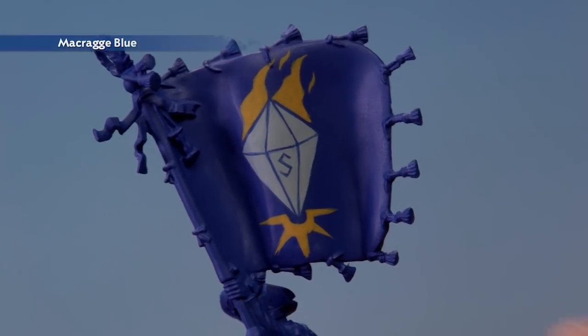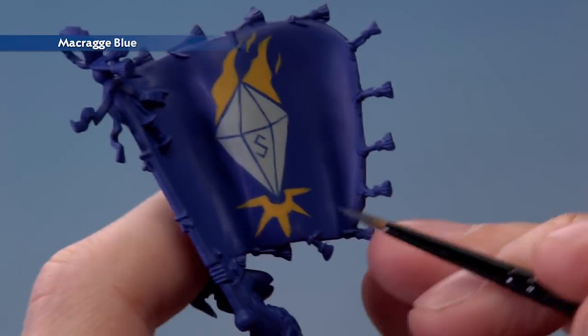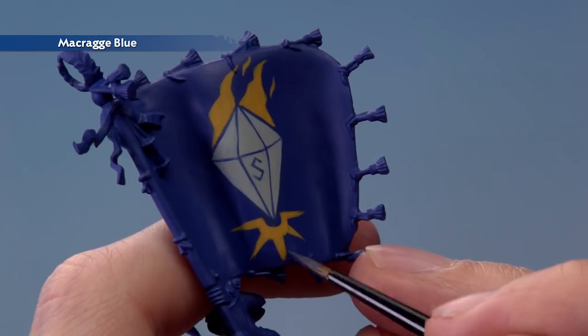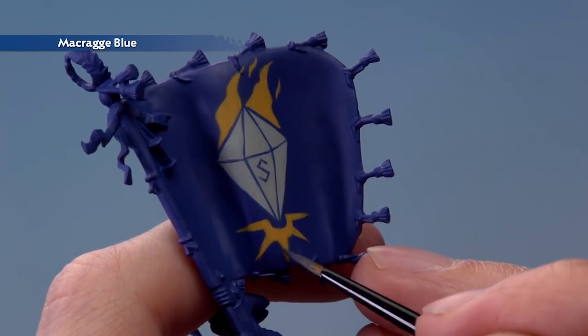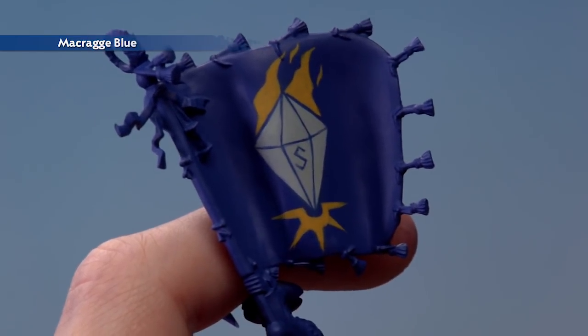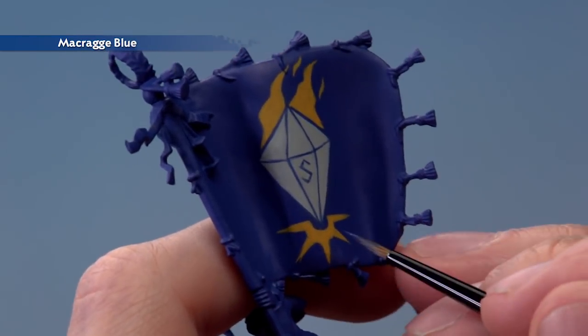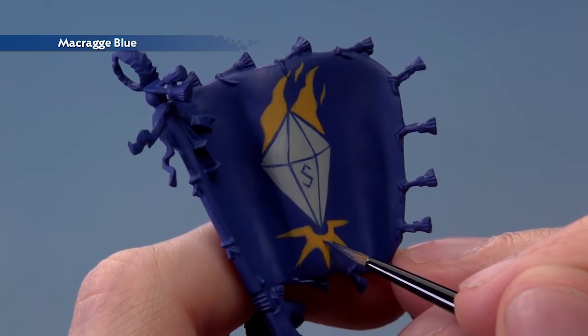And finally we're ready to return to Macragge Blue once more to finish off the yellow details. So again we can neaten them up by just cutting into them ever so slightly like this to sharpen up designs just down here and make these arrows a little bit narrower like that. But also can use this point just to add a few little extra details too such as little dots that we've got in this part down here.